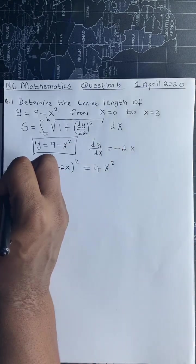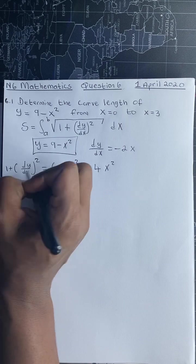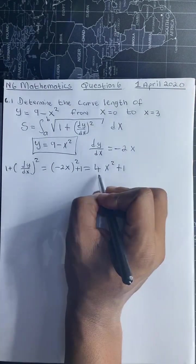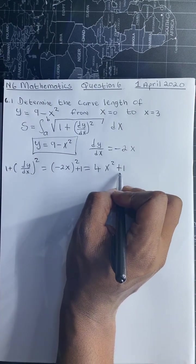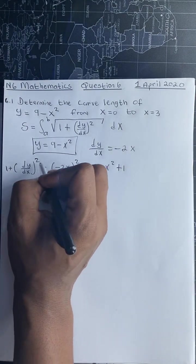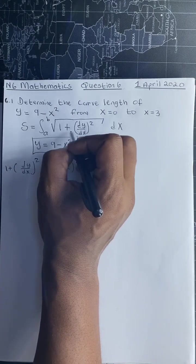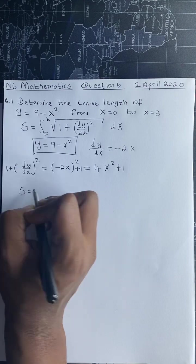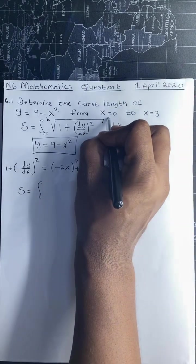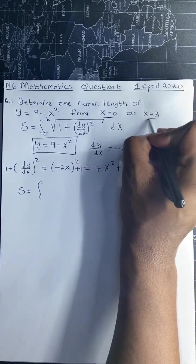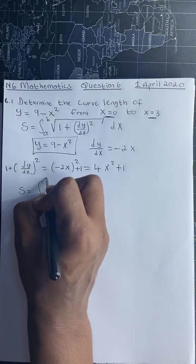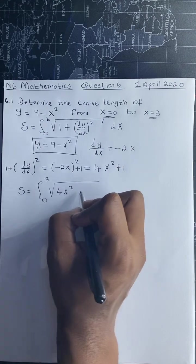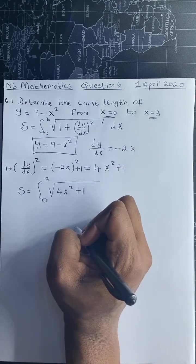We add 1 to our (dy/dx)², giving us 4x² + 1. We can take this 4x² + 1, which equals 1 + (dy/dx)², and substitute it into our formula. So s equals the integral from x equals 0 to x equals 3 of the square root of 4x² + 1 dx.